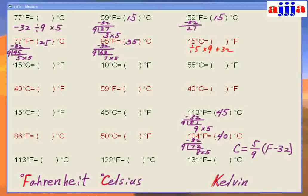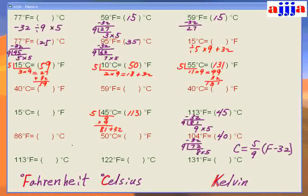See how easy! For example, from 15°C — divide by 5, which is 3, times 9, which is 27, plus 32 — that's 59. So 15°C equals 59°F. See how easy!